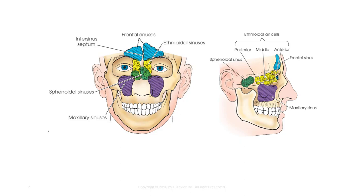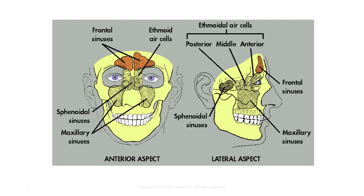The ethmoids do not fully develop until 17–18 years of age. The maxillary sinuses are the largest and most symmetric, with one in each facial bone. They vary in size and shape, but are approximately pyramidal in shape. The frontal sinuses are the second largest sinuses.